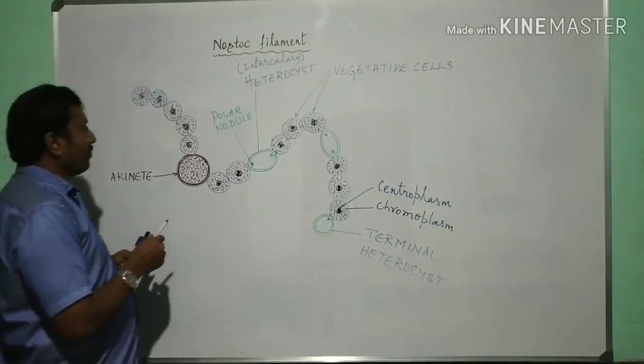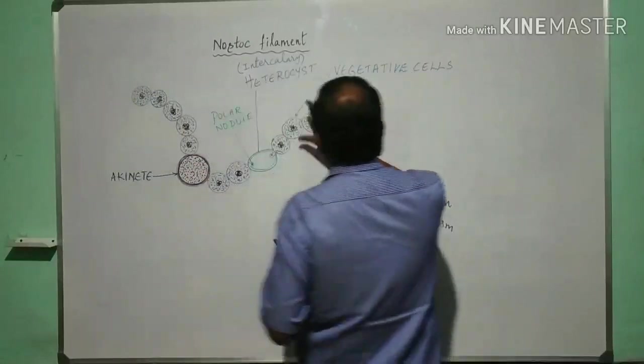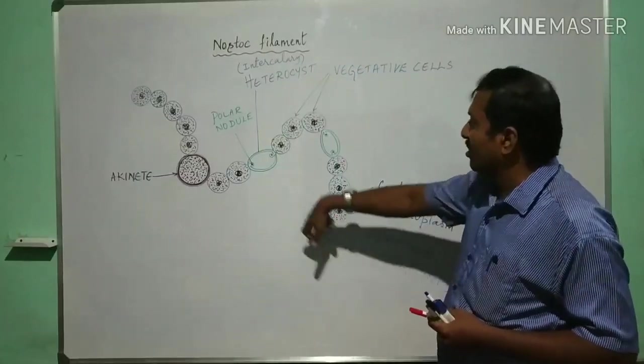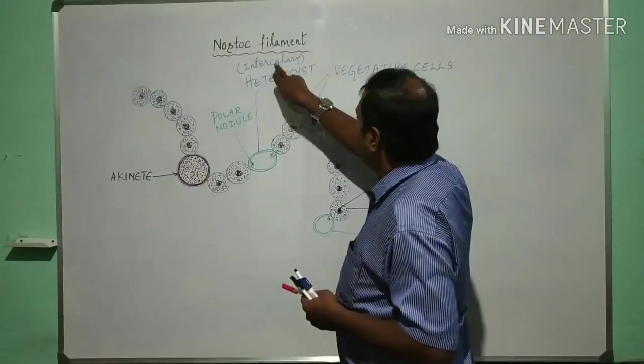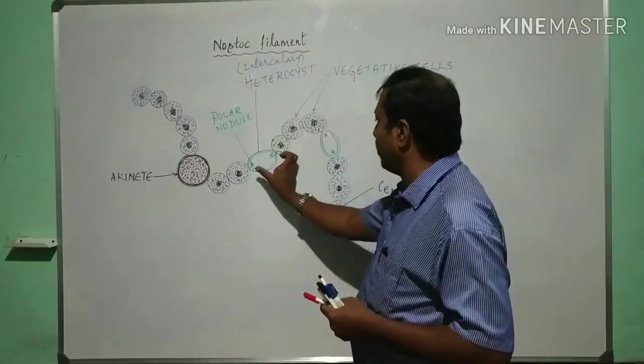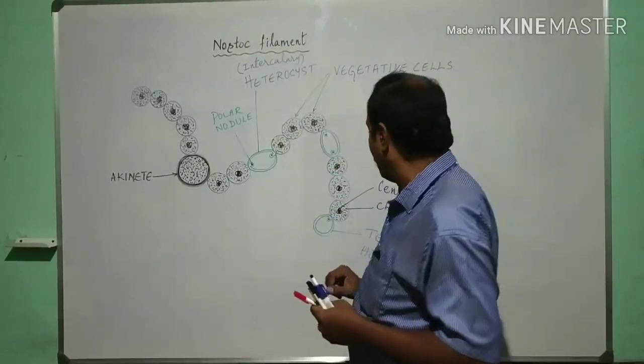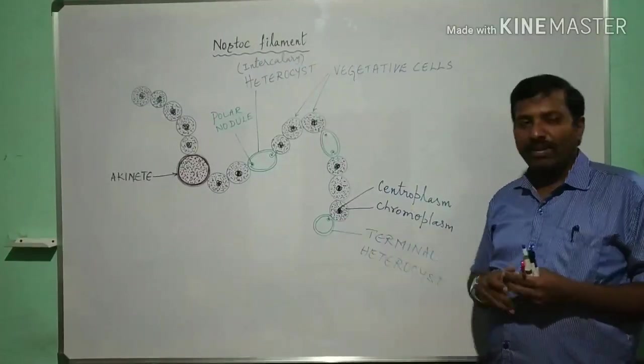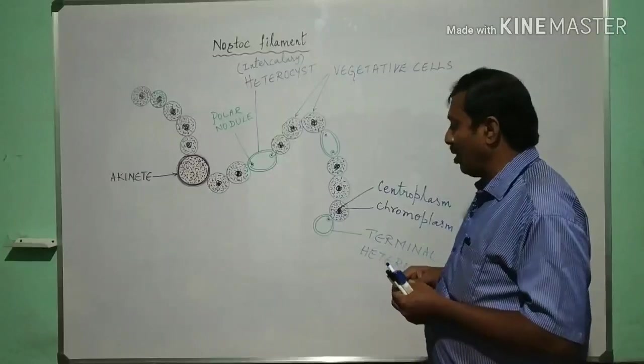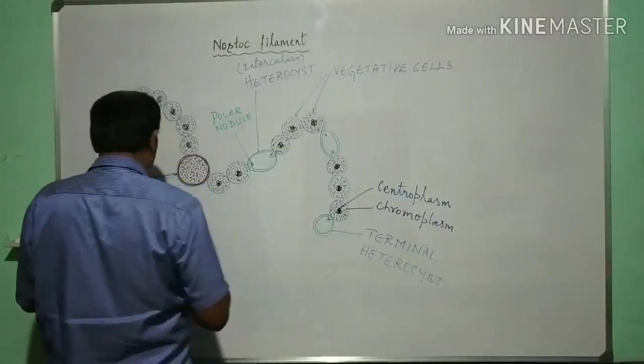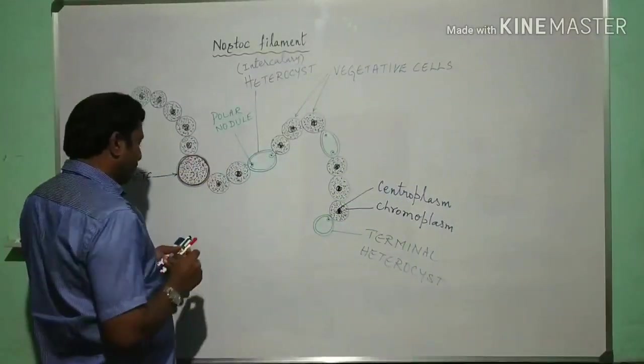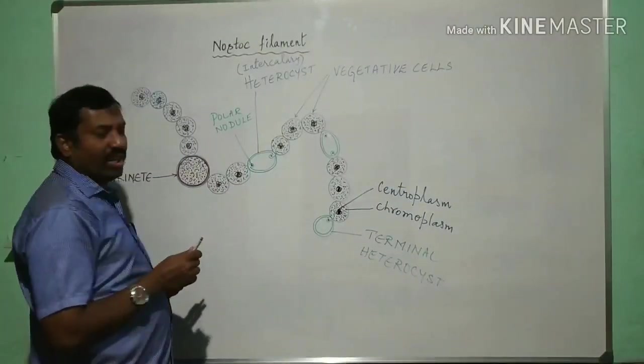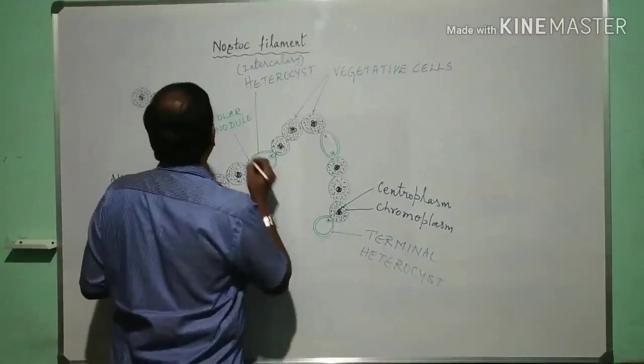These are the vegetative cells with centroplasm chromoplasm differentiation, this is terminal heterocyst, this is intercalary heterocyst with two polar nodules at the junctions where it is attached to the vegetative cells. And here terminal means only one end will be attached to the vegetative cells, there it has the polar nodule through which there will be transport of substances. And here now I am going to draw the mucilage covering.